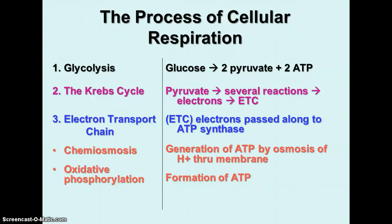In glycolysis, glucose is split into two three-carbon molecules called pyruvate, or pyruvic acid, and releases two ATP molecules of energy.